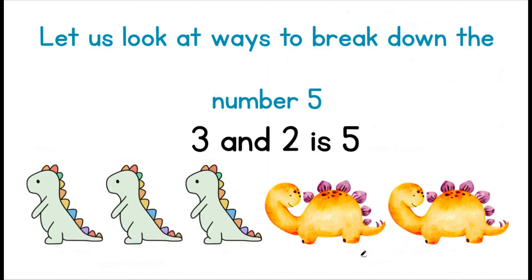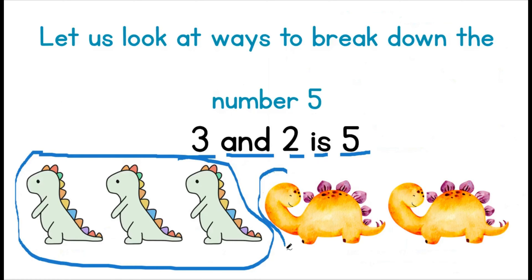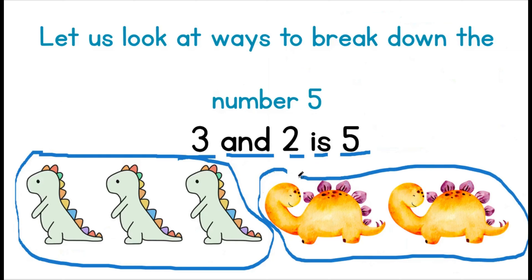Let us look at ways to break down the number five. We have three green dinosaurs and two orange dinosaurs. Let us count how many they make together: one, two, three, four, and five. This means that three and two is five.